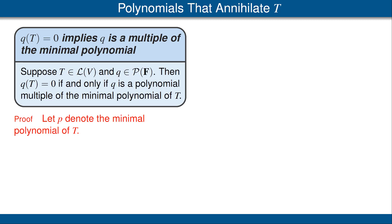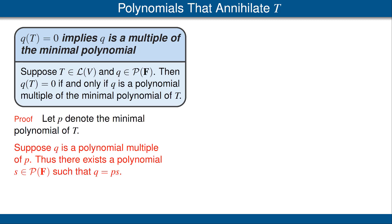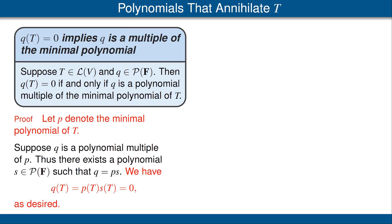We'll start with the easy direction. Let p be the minimal polynomial of T, and suppose q is a polynomial multiple of p. Thus there's another polynomial s such that q = p · s. This means q(T) = p(T) · s(T). But because p is the minimal polynomial, p(T) = 0, so q(T) = 0. We've shown that if q is a polynomial multiple of the minimal polynomial, then q(T) = 0.